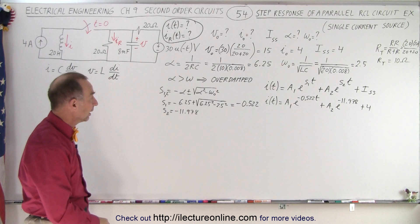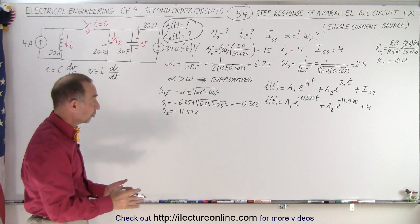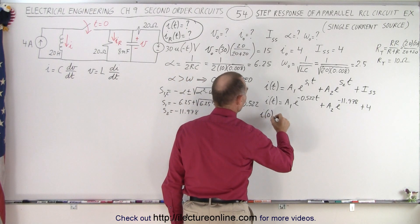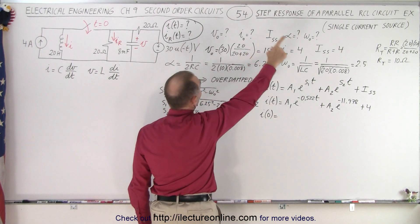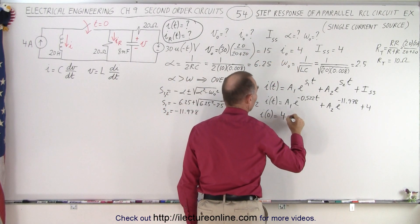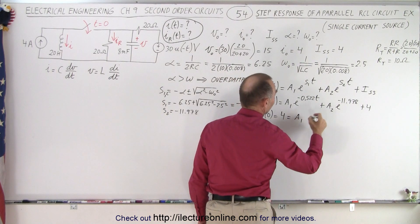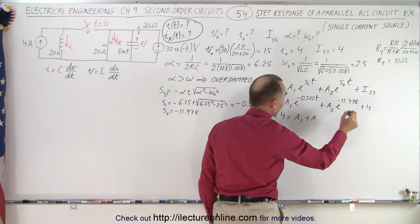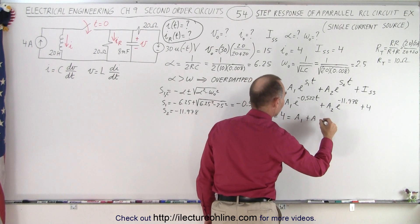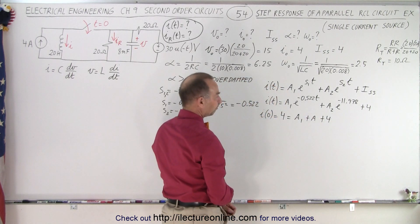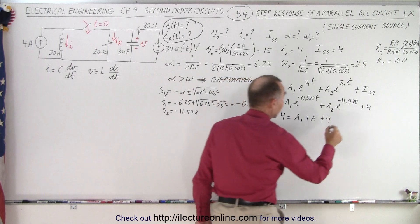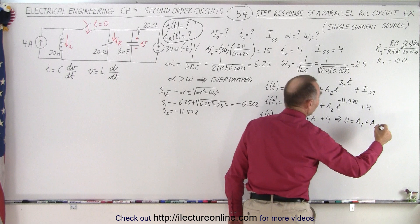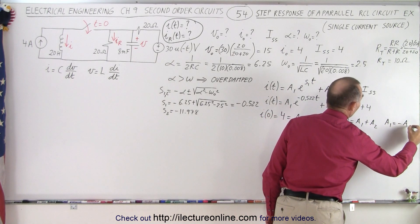Now we're just down to finding a1 and a2. Using the initial condition, I at t equals 0 equals the initial current of 4. Setting t equal to zero makes the exponentials equal to 1, so 4 equals a1 plus a2 plus 4. Subtracting 4 from both sides, 0 equals a1 plus a2, which implies a1 equals negative a2.